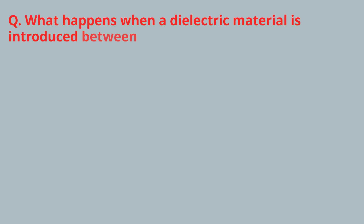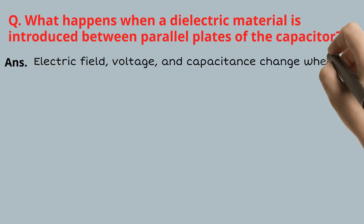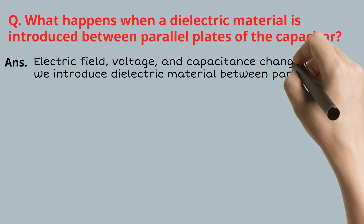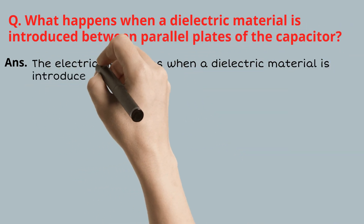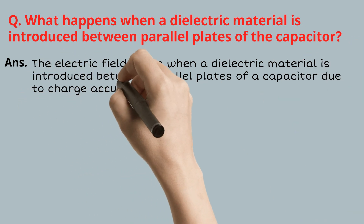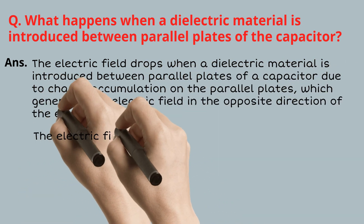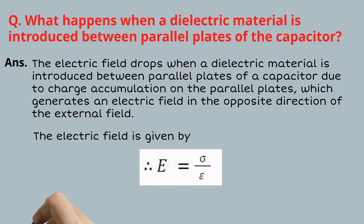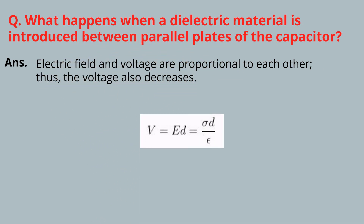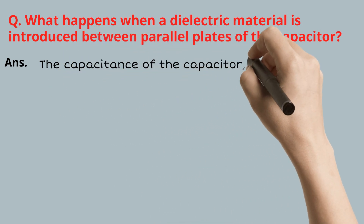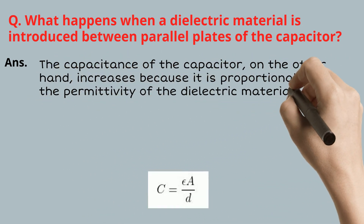FAQ: What happens when a dielectric material is introduced between parallel plates of a capacitor? Electric field, voltage, and capacitance all change. The electric field drops due to charge accumulation on the parallel plates, which generates a field in the opposite direction of the external field — given by E equal to sigma upon epsilon. Since electric field and voltage are proportional, voltage also decreases: V equal to sigma d upon epsilon. The capacitance, on the other hand, increases because it is proportional to the permittivity of the dielectric material — given by C equal to epsilon A upon d.